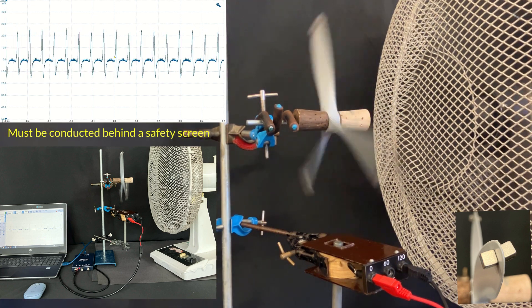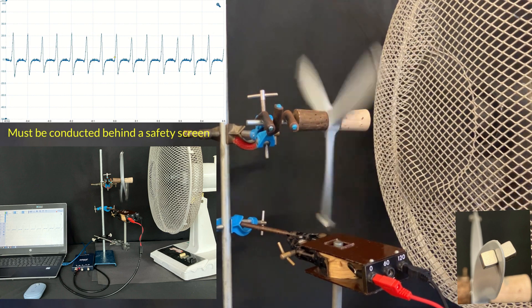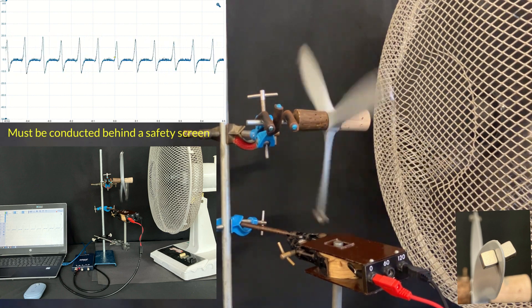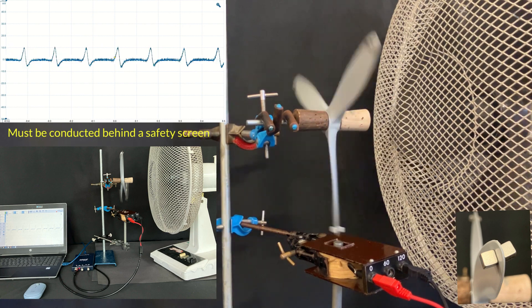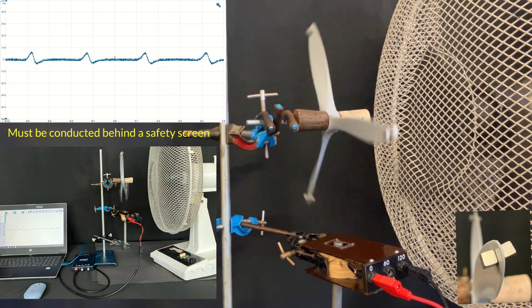And then if I turn the fan off, then gradually we can see that it slows down, and the induced potential difference gets smaller, and it gets further apart in time on the oscilloscope trace.